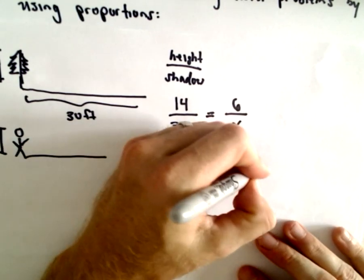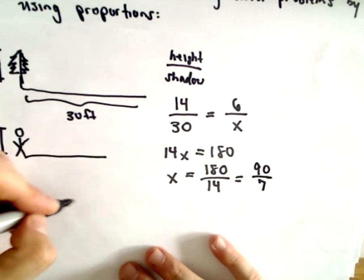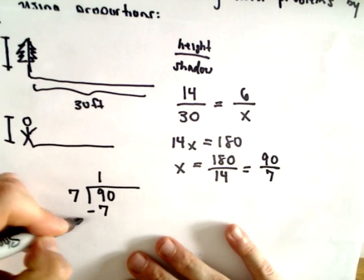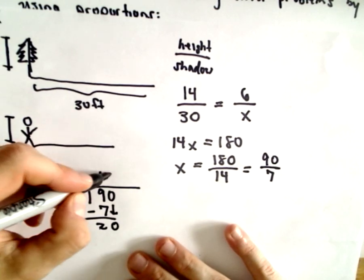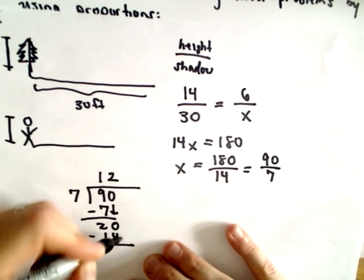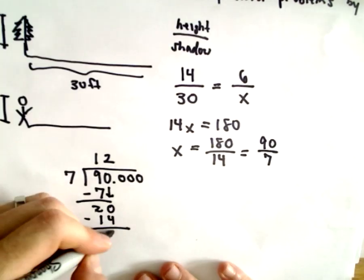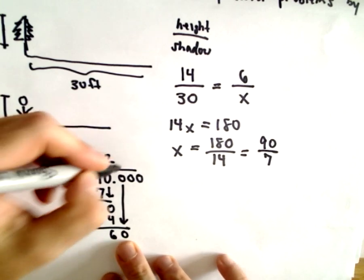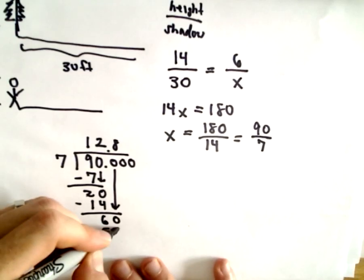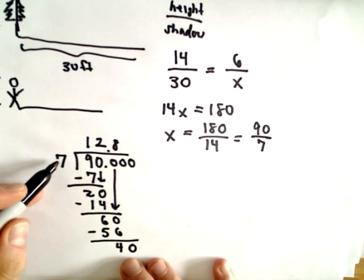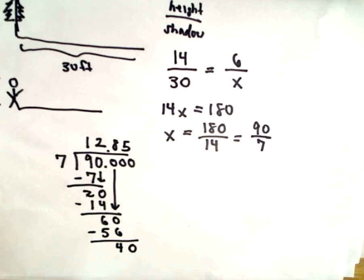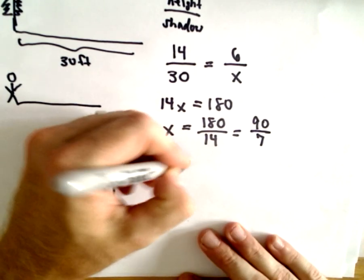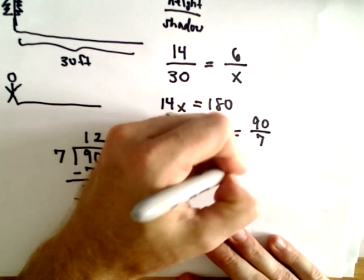The height of the person is 6. We're trying to figure out the length of the shadow. Let's call that X. I'm going to cross multiply. So we'll have 14 times X. We'll have 6 times 30, which will be 180. We can divide both sides by 14. These are both even. That's going to give us 90 divided by 7. Let's do some long division. 7 goes into 90 once. Let's drop down our 0. 7 goes into 20 twice. 2 times 7 is 14. 7 will go into 60 eight times. 8 times 7 is 56. If we drop down another 0, 7 will go into 40 five times.